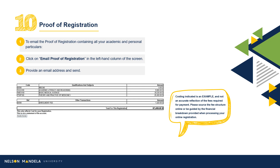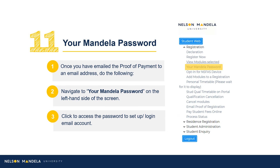Navigate to the left-hand drop-down menu on screen. Scroll to Email Proof of Registration, insert an address of your choice, and click Send. Once the document has been successfully emailed, navigate to the drop-down menu and click Your Mandela Password. This is a password provided or chosen for use to log into your institutional email and student portal, amongst others.